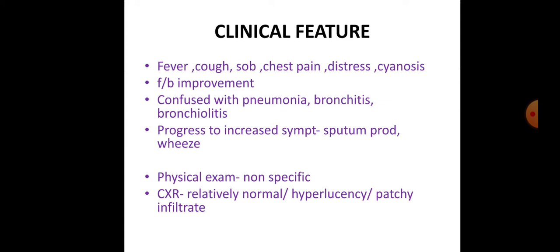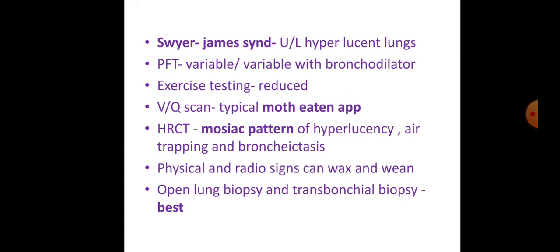Chest X-ray usually appears normal, but can also show hyperlucency or patchy infiltrates. Swyer-James syndrome — unilateral hyperlucent lung — may be present. Pulmonary function tests are usually variable. Exercise testing shows reduced exercise tolerance. A ventilation-perfusion scan shows a typical mosaic appearance. HRCT shows a mosaic pattern of hyperlucency, air trapping, and bronchiectasis. Physical and radiological signs can wax and wane over weeks or months.